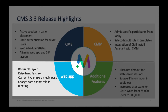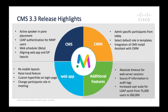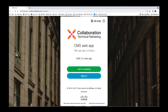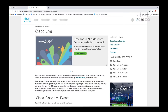CMS 3.3 web app has the ability to change the participant's role in a meeting, and has customizable hyperlinks on the sign-in page. In this example, you're seeing a website link opening to a Cisco Live website.